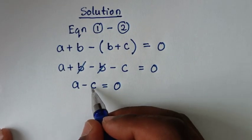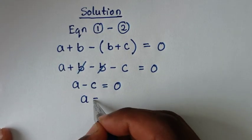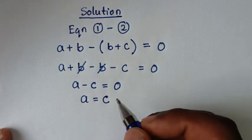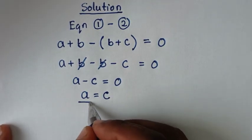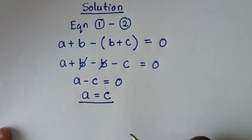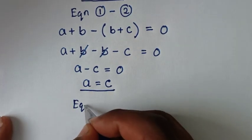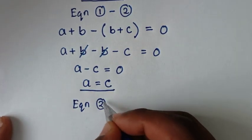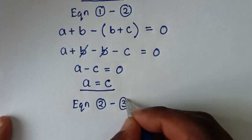Then from here, we'll take c to this side, so it will be a is equal to c. In step 2, we'll take equation 2 minus equation 3.